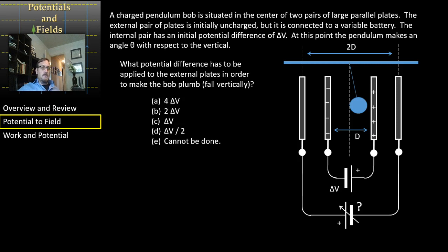The question is: if I can change the voltage here on this second battery, what voltage do I need to put on this battery to cancel out the field, assuming there aren't any other interesting effects? I've got four ΔV, two ΔV, ΔV, ΔV/2, and E - that it cannot be done.